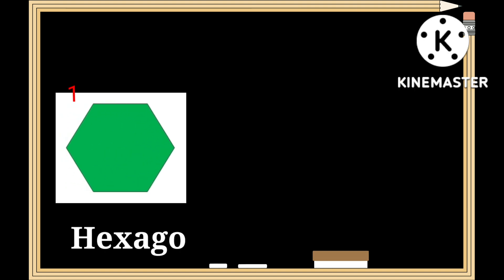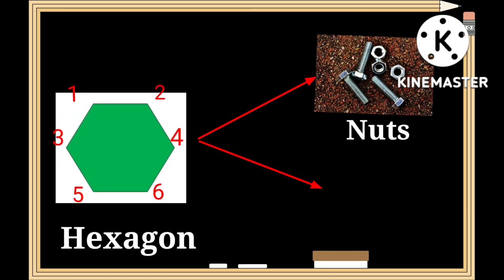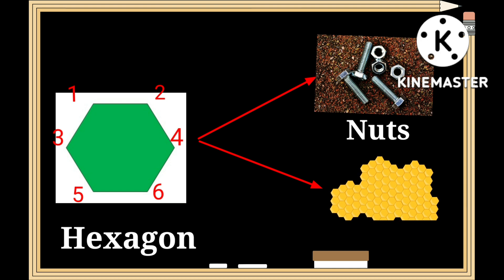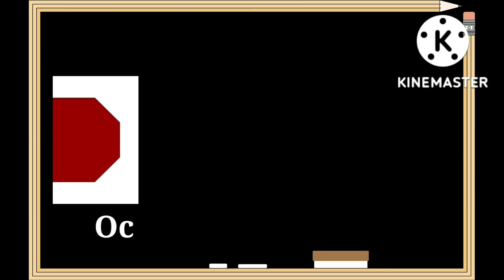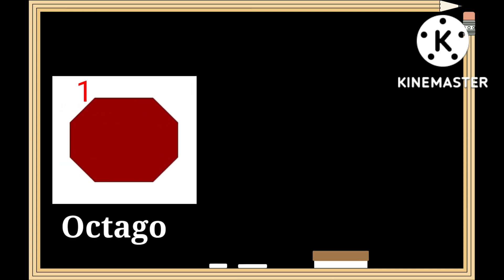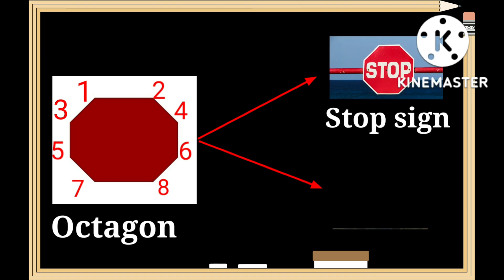This is a shape of a hexagon — h-e-x-a-g-o-n. It has six edges. Nuts and a honeycomb have a similar shape to that of a hexagon.